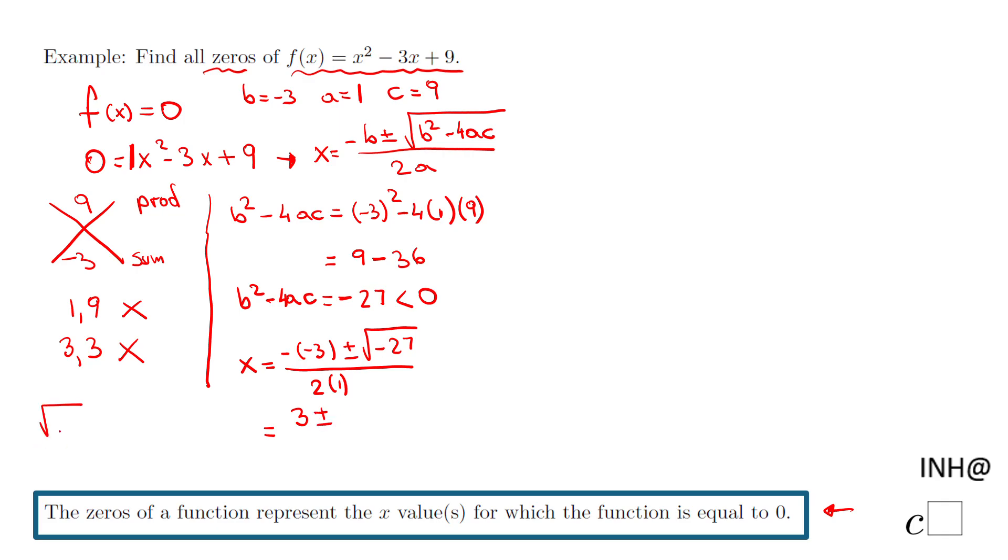The square root of -27 is i√27. Make it positive. Square root of 27, remember 27 is 9 × 3, so that would be 3√3. So we have the two zeros: 3 + 3i√3 over 2, and the other one is 3 - 3i√3 over 2.